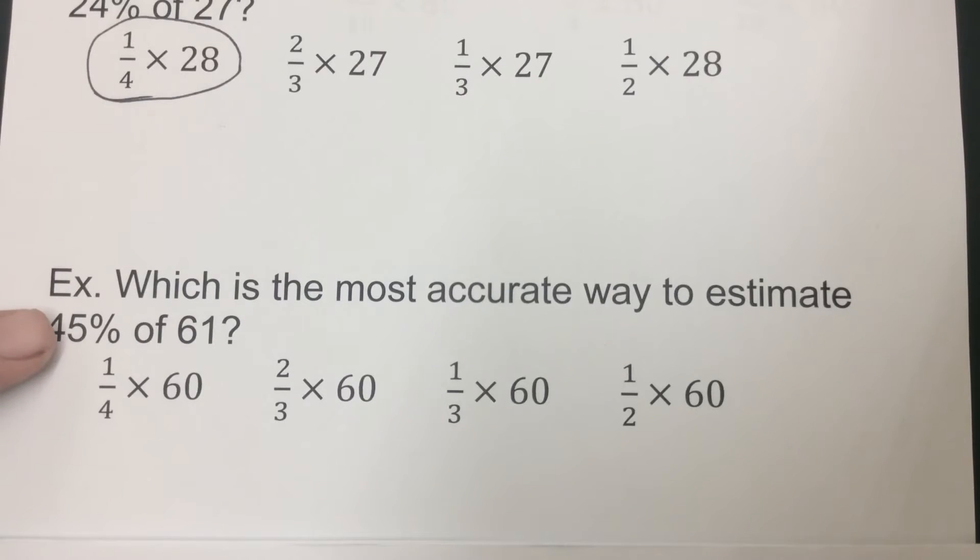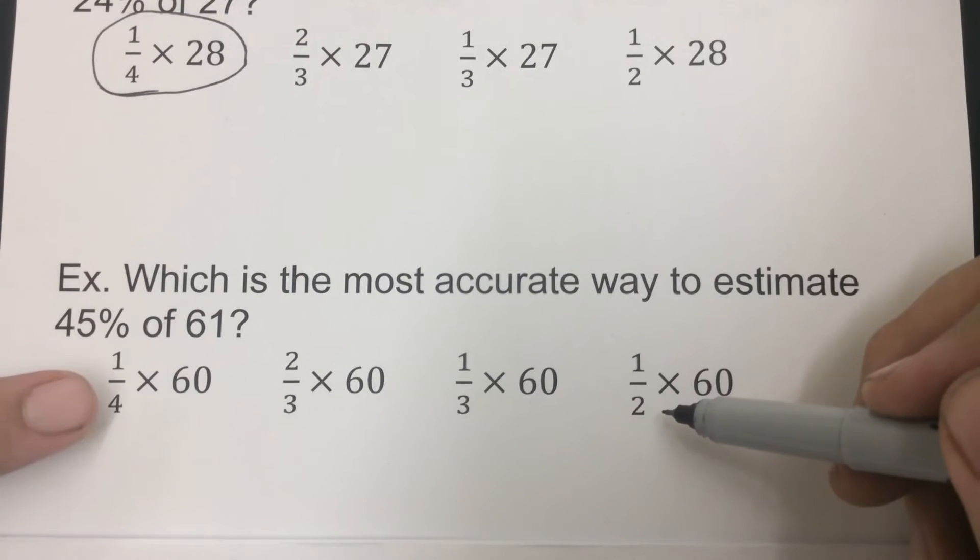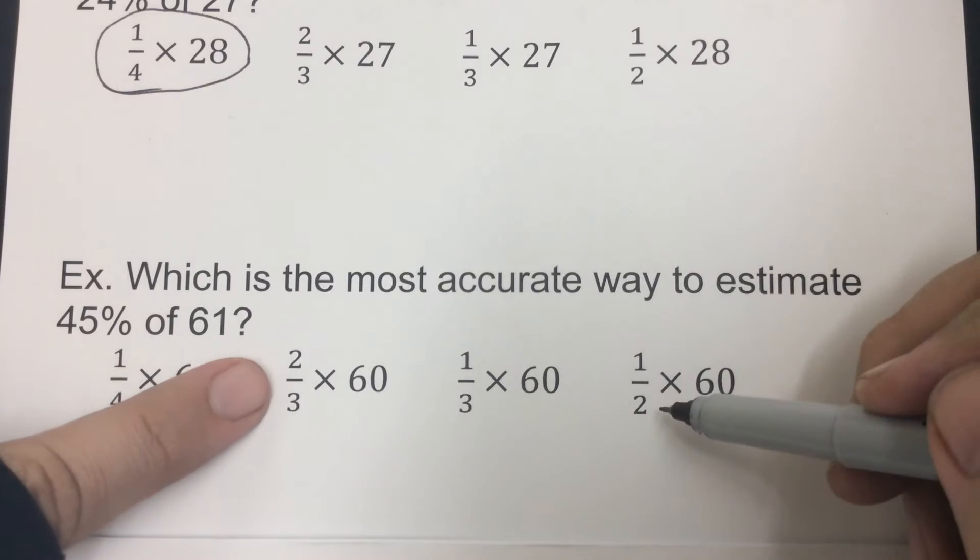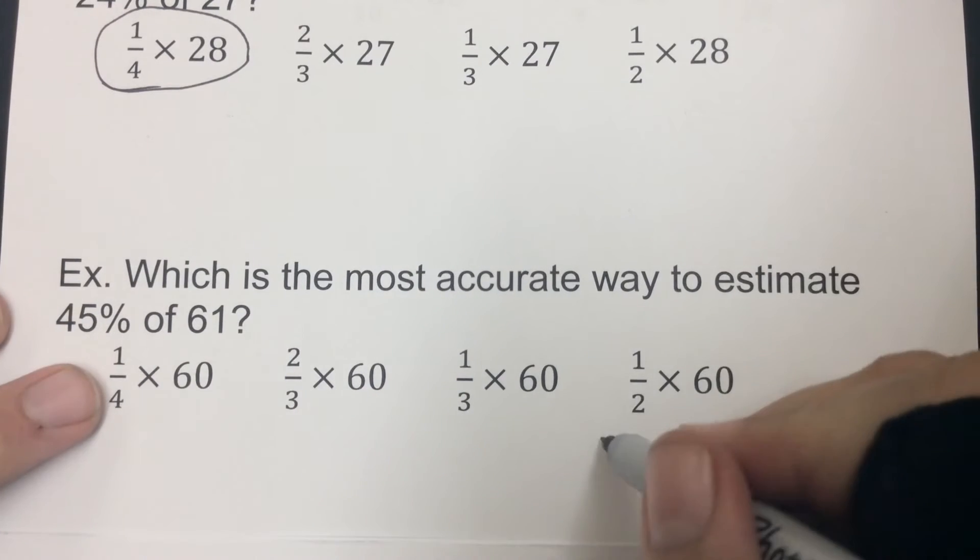But 45% is close to 50, and 50% is one-half, so I'm looking here. Now again, go through and double-check: one-fourth is 25%, a bit away; two-thirds is 66%, well above, so you don't want that; one-third would be 33%, again well below. We're closer to 50, so we're gonna go with the half.